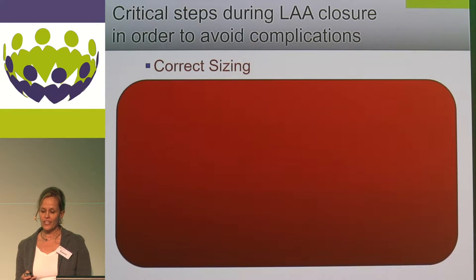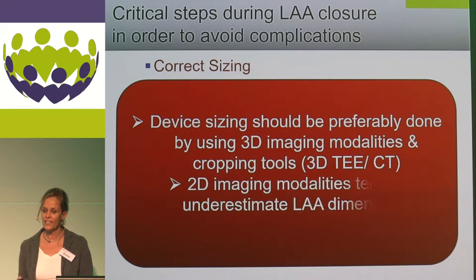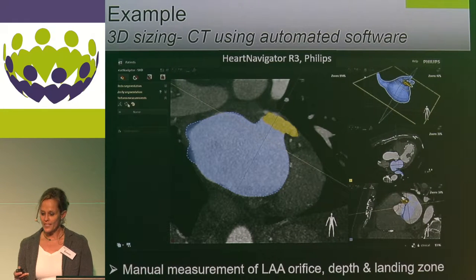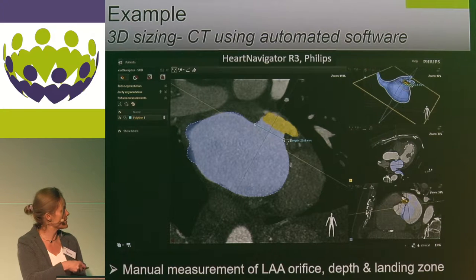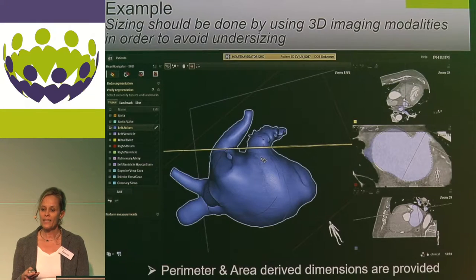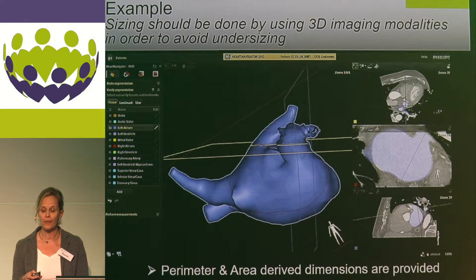As an example for correct sizing, there is consensus that we should use 3D imaging modalities — 3D TEE if available, or CT in advance. If using 2D imaging modalities, we will underestimate LAA dimensions, and we should always consider fluid status and volume loading. With CT, you can measure the ostium, the depth of the left atrium, and the size of your landing zone. With 3D imaging you can also get perimeter and area-derived dimensions.